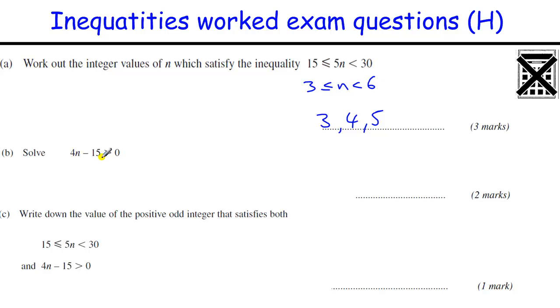On this question, 4n minus 15 greater than 0, we are just going to add the 15 to both sides, to get 4n is greater than 15, then we divide by 4, to get n is greater than 15 over 4, which is going to be 3 and 3 quarters, or 3.75, either of those will do, for 2 marks. Write down the value of positive odd integer that satisfies both this and that, so we've got those values there, and this equation here, what value satisfies both, so it's got to be greater than 3.75, it's got to be positive, it's got to be odd, so that's going to be the number 5.